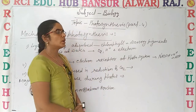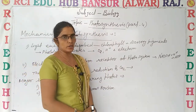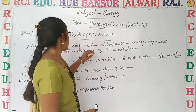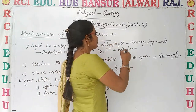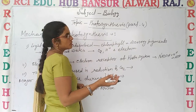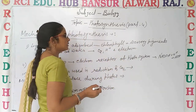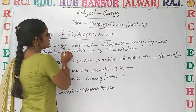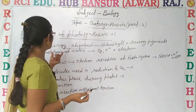In the first step, light energy is absorbed by the chlorophyll molecule, which is the major pigment. Chlorophyll is the major pigment, and some accessory pigments are also present, like terpenoids and phycobillins. They absorb the light energy, and that light energy causes photolysis of water.